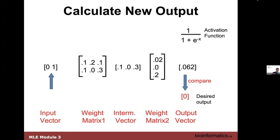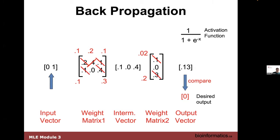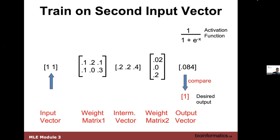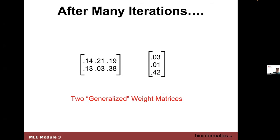As we back propagate, we change the error based on the difference between the output and desired output, using the learning rate, the cost function, and the derivatives of the activation function. Numbers get changed. We recalculate and see if we're any closer — from 0.13 we're now at 0.062. We try a new input for another epoch or batch: starting at 0.084 and desiring one, we back propagate and change the weights again. Eventually we get something that converges. The net result is these weight matrices — the numbers assigned to the edges in the network.